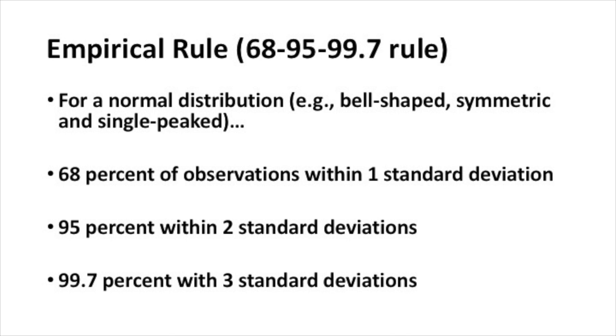Why do we use that cutoff of 3 standard deviations to identify outliers? Part of the explanation comes from what we call the empirical rule, also known as the 68-95-99.7 rule. The empirical rule tells us that if you have a normal distribution — bell-shaped, symmetric, and single-peaked — 68% of the observations are within one standard deviation of the mean, 95% are within two standard deviations, and almost the entire distribution, 99.7%, falls within three standard deviations of the mean.